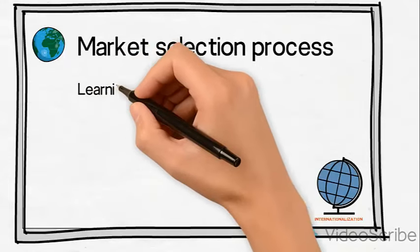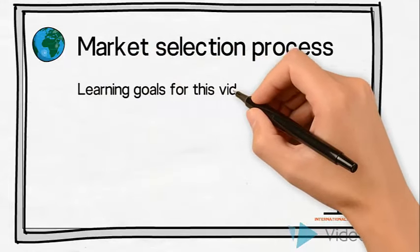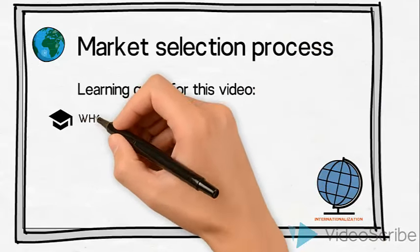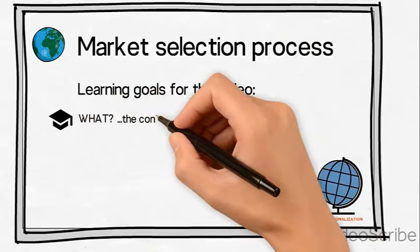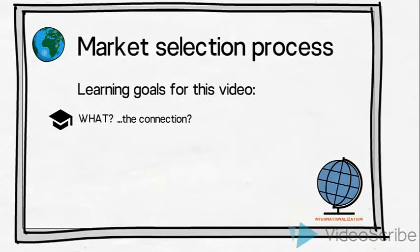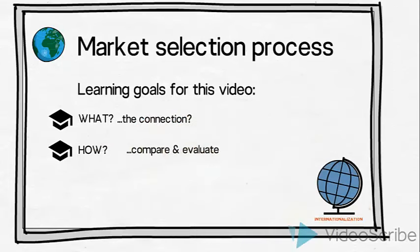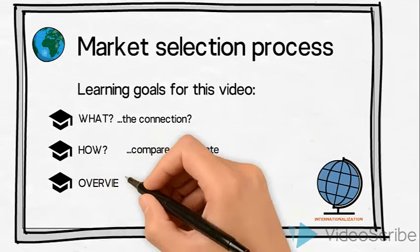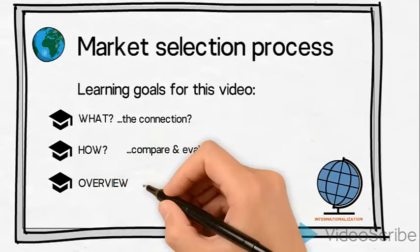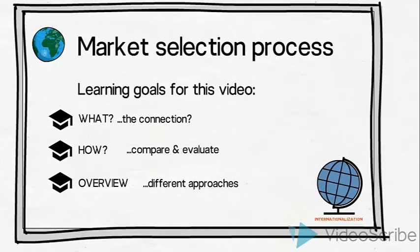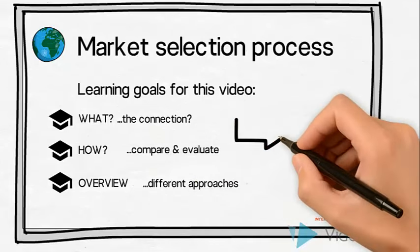Let us start by listing the learning goals for this video. Firstly, we will address what the connection with the rest of an organization's internationalization process is. Secondly, we will look at how we can compare and evaluate different countries or markets so that we are able to make an informed choice of which one to select. Finally, since no two organizations are the same and they behave very differently, we will provide an overview of some different approaches to a market selection process.